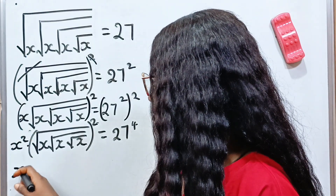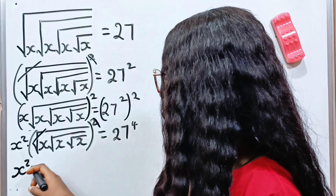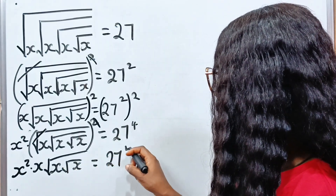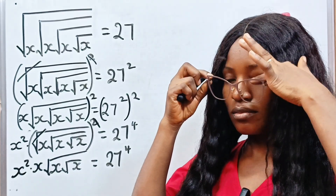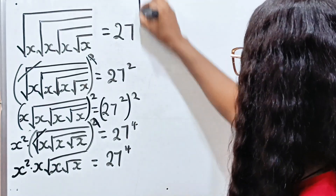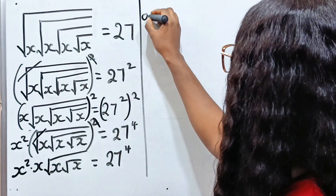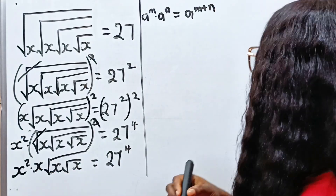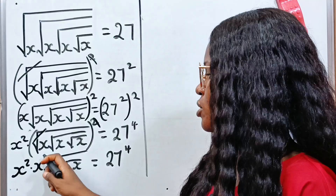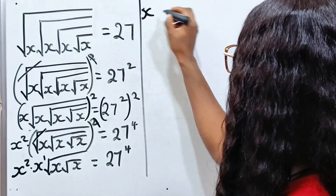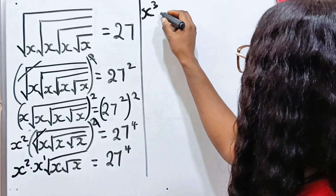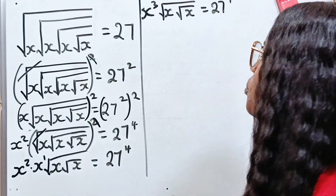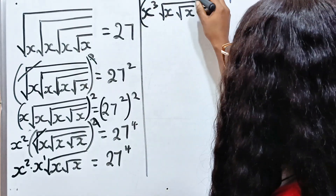So we have x squared. This squaring removes that root, leaving us with x multiplied by x times square root of x, times root x, equal to 27 to the power of 4. Now, remember that a^m × a^n = a^(m+n). In this case, x squared times x to the power of 1 gives us x to the power of 2+1 = x to the power of 3. Then we still have root x equal to 27 to the power of 4. So we square both sides again.